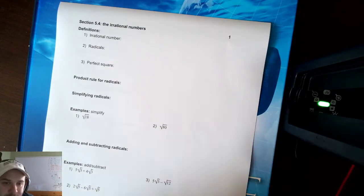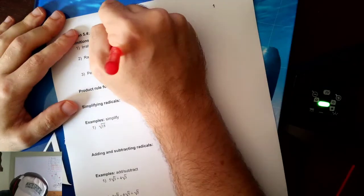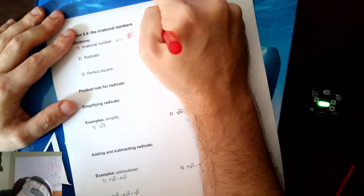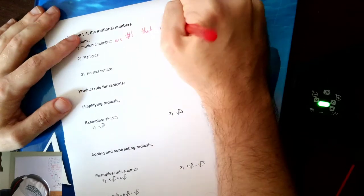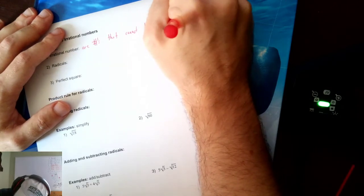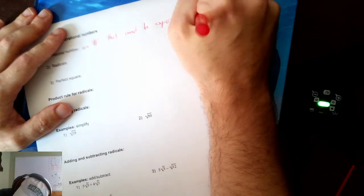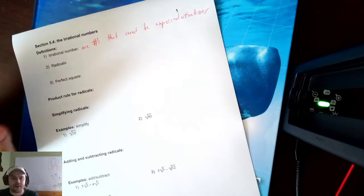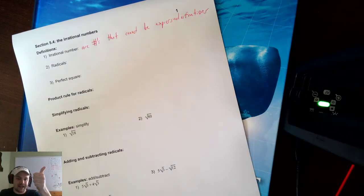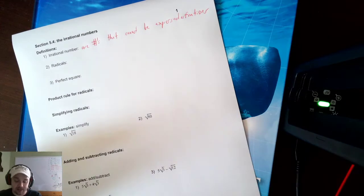Section 5.4 deals with irrational numbers. Irrational numbers are numbers that cannot be expressed as fractions. There is no fraction that equals these numbers. Common examples of irrational numbers are Pi, E, and what we're going to talk about today, which are radicals.